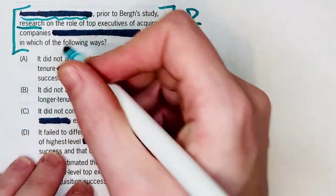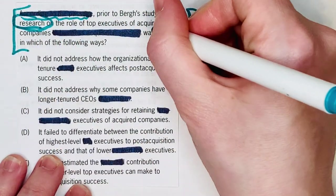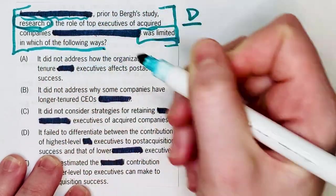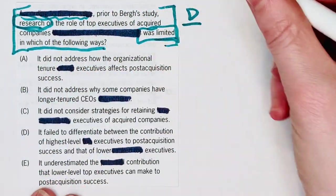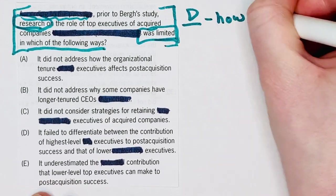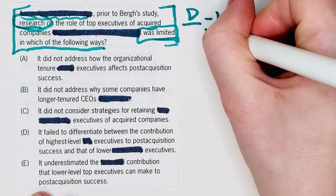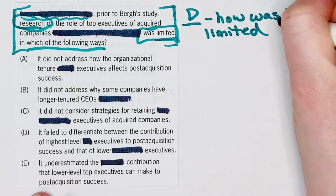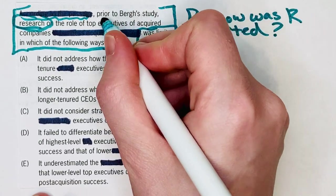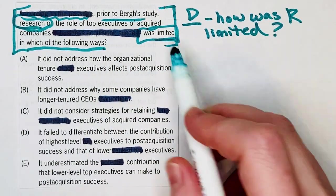Using our sentence correction skills here, the subject of this sentence is 'research,' and the predicate verb is 'was limited in which of the following ways.' So if I was doing this on the GMAT, the first thing I would write down is a rephrase — maybe something like: how was research limited? We want to know, prior to this study that the passage discusses, how is research limited?